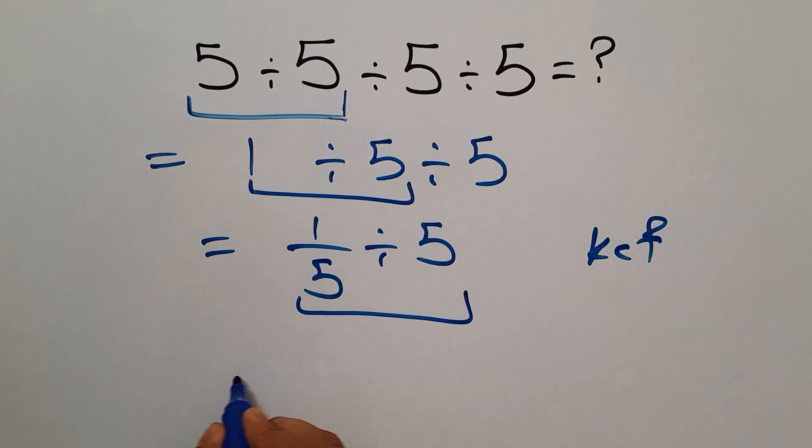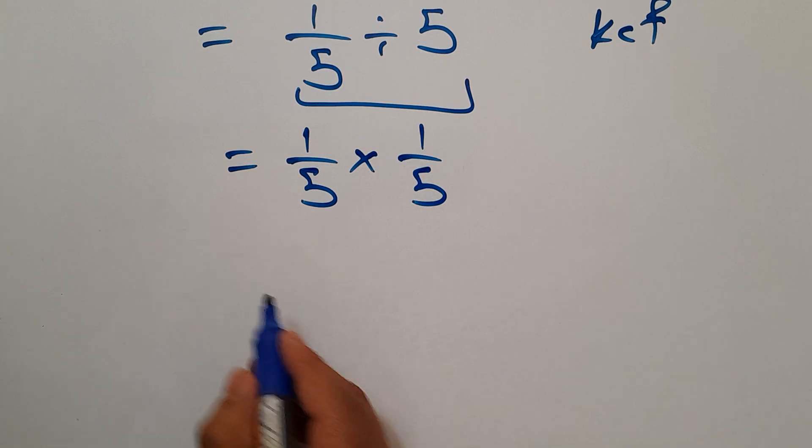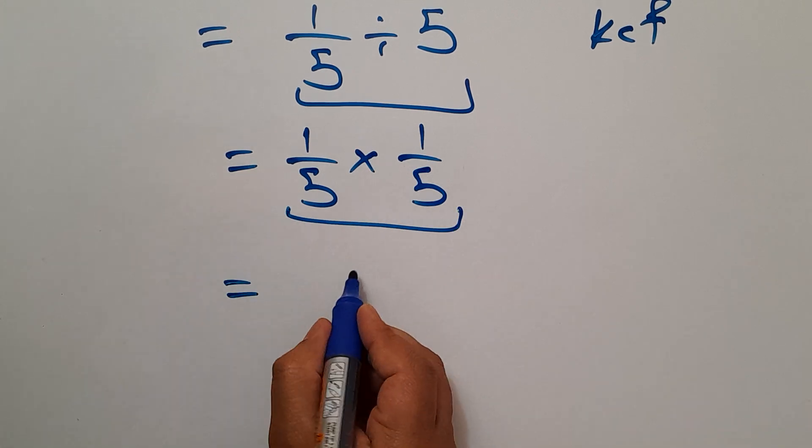1 over 5 divided by 5 can be written as 1 over 5 times 1 over 5. This equals 1 over 5 times 5.